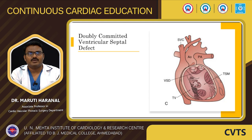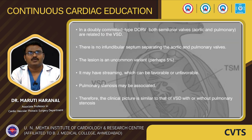Doubly committed VSD: both semilunar valves are associated with the VSD and there is no infundibular septum separating the aortic and pulmonary valves. This is an uncommon variant representing around 5% of DORV cases. It may have favorable or unfavorable streaming; pulmonary stenosis may be associated. Therefore the clinical picture is similar to that of VSD with or without pulmonary stenosis.